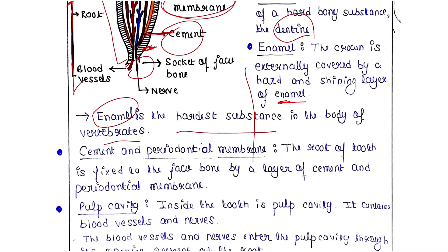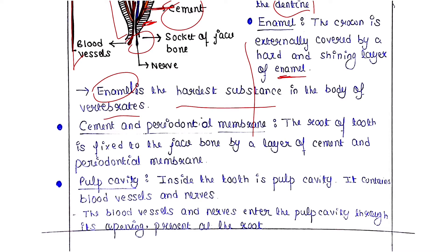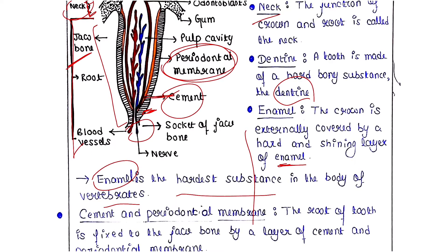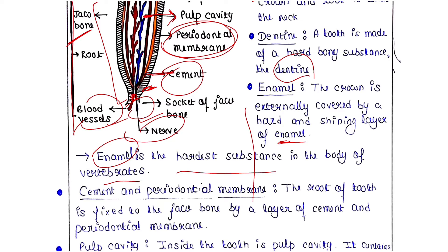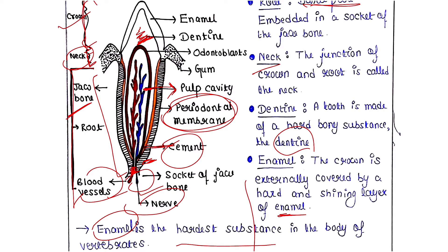Inside the tooth is the pulp cavity, which contains blood vessels and nerves. The blood vessels and nerves enter the pulp cavity through an opening present at the root. Here you can see the pulp cavity — the red one is the blood vessel and the blue one is the nerve — and they enter through an opening at the base of the root.